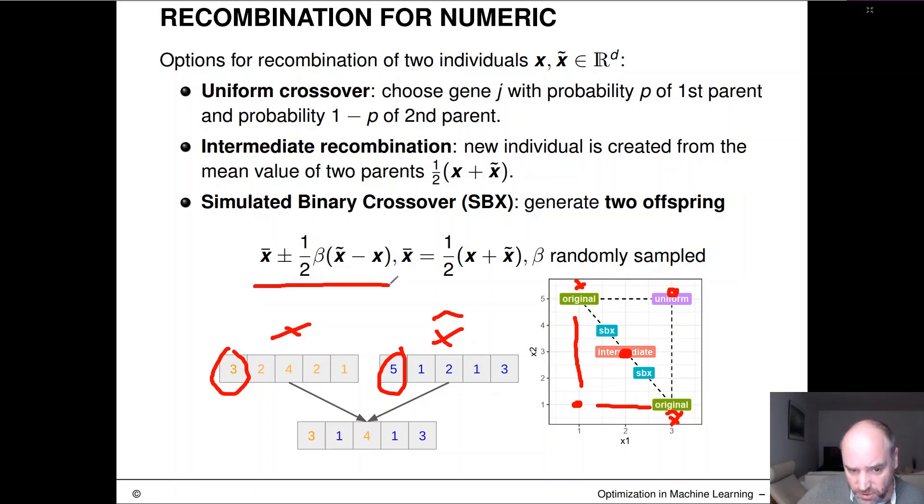So we produce a convex combination from these two guys by randomly sampling this beta value here, which tells us where we are on the connecting line. So if you would have sampled beta of 0.5, we would have intermediate recombination. And obviously this is somewhere between 0 and 1.